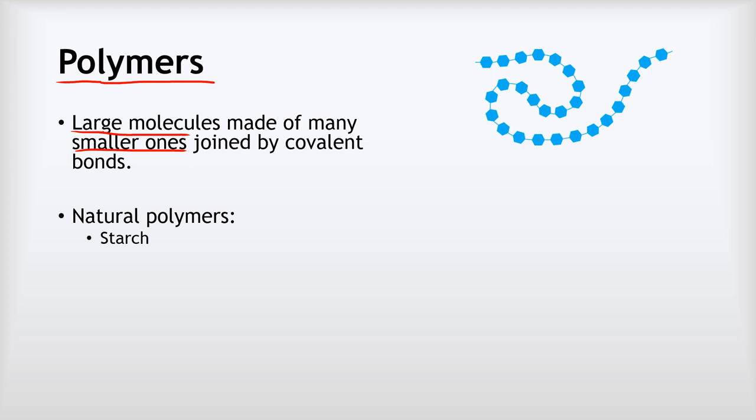So for example, the starch that you eat in lots of different foods, that's a polymer. So these are the small molecules that starch is made from. These are actually glucose molecules, and they join together to form this much longer chain that we call starch.